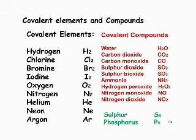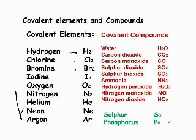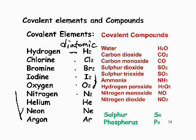Now we'll look at covalent compounds and covalent elements. You won't find these on the data sheet; you need to commit them to memory. Most diatomic elements exist as pairs: H₂, Cl₂, Br₂, I₂, O₂, N₂. These molecules are described as diatomic — di meaning two — a molecule made up of two atoms bonded together.